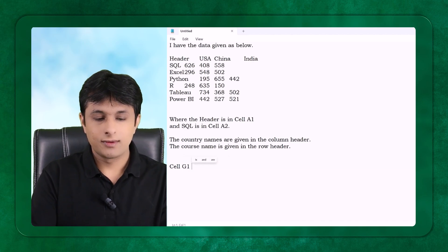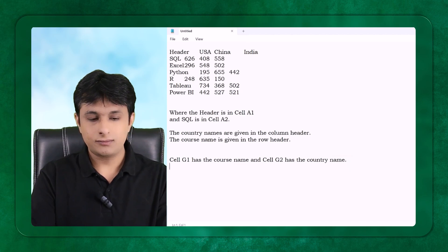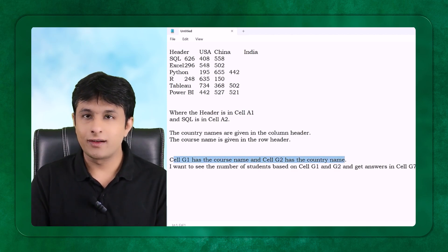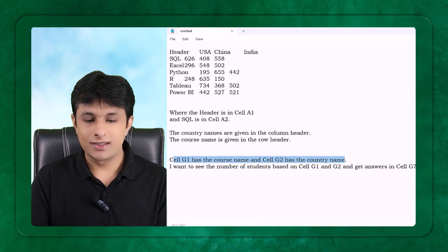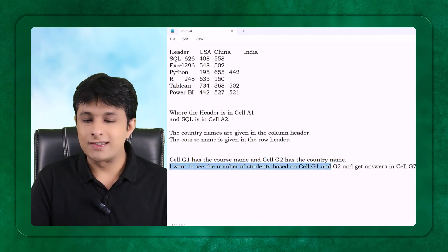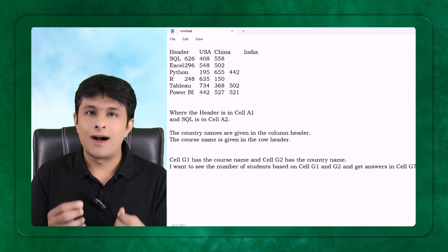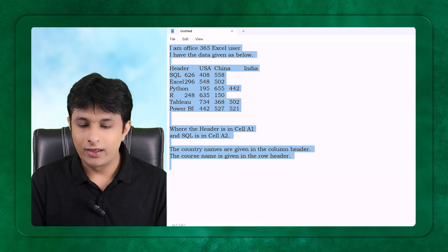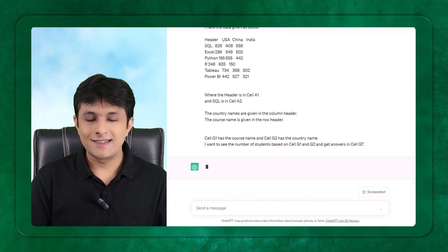Cell G1 has the course name and cell G2 has the country name. I want to see the number of students based on G1 and G2, and give the answer in cell G7. This is the method — the way you ask ChatGPT questions. I copy this full text with Ctrl+C, go to ChatGPT, create a new chat, paste it with Ctrl+V, and press Enter.